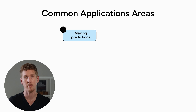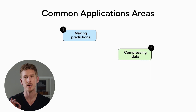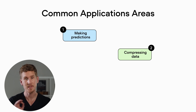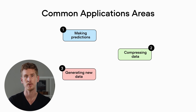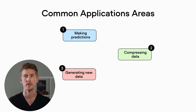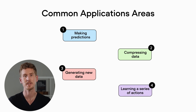Another application area that is very interesting is compressing data, like having big datasets that we reduce in size. Also, a currently very hot topic of machine learning is generating new data, where we create art, audio, videos, and so forth. And lastly, the fourth common application area is learning a series of actions.